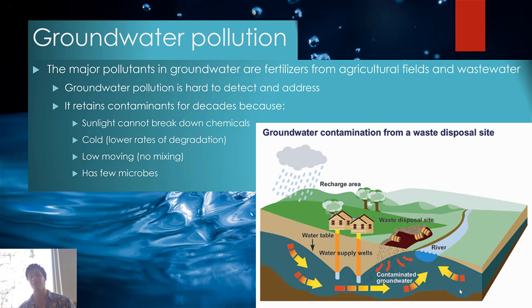Contaminants in groundwater can persist for decades because sunlight can never break them down underground. The water is cool with a very consistent temperature of around 70 degrees, there's no sunlight to break down complex chemicals, there's almost no mixing due to slow movement, and there are very few microbes to break down nutrient components. As a result, pollution in groundwater stays for a very long time until it is piped up to our water supply where we consume it and experience the negative side effects.